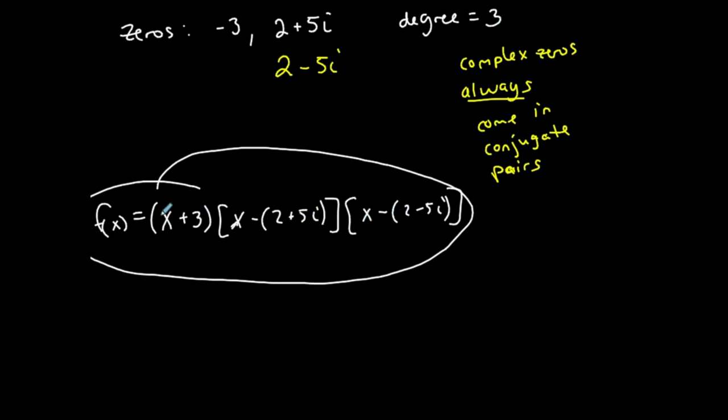So now I have to take that and multiply it by x plus 3. So now x plus 3 times x squared minus 4x plus 29, and every single term here gets multiplied by every single term here.